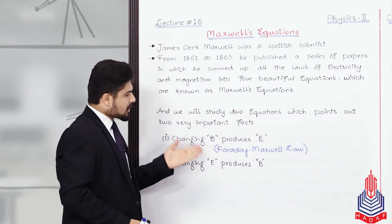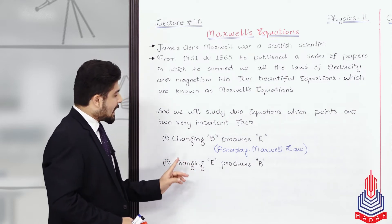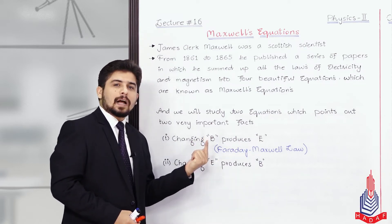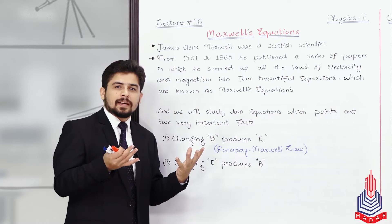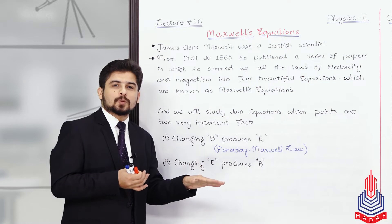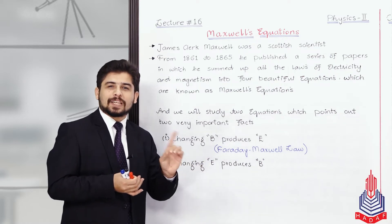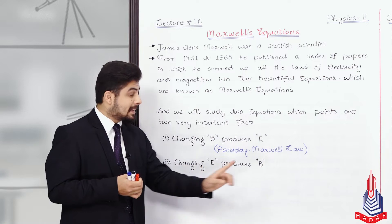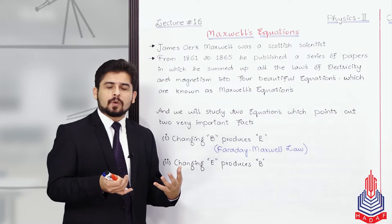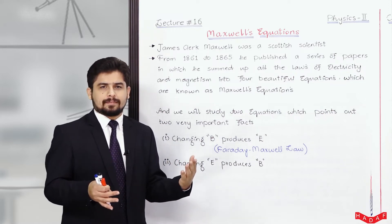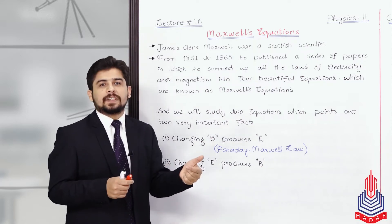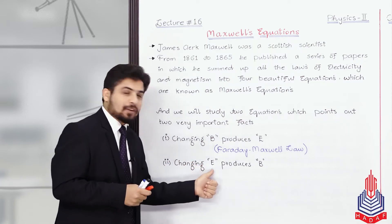Then we will study the reverse of it — that is, he also proved that changing E produces B. If in some space there is a changing electric field and you place a compass there, you will see the compass needle deflect. The deflection of the compass needle means there is a magnetic field.